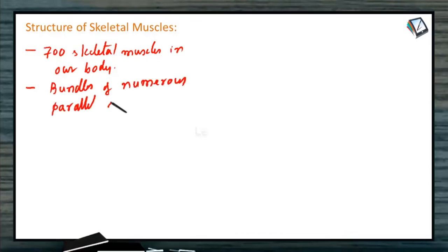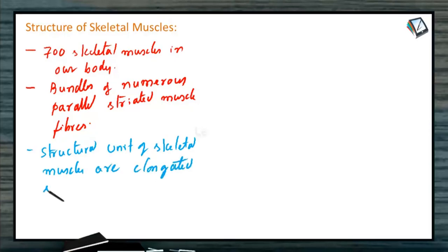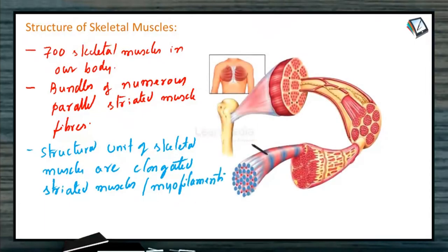The structure of skeletal muscle cell. Generally in human body, there are nearly 700 skeletal muscles. Usually they occur in the form of bundles of numerous parallel striated muscle fibers. The structural unit of skeletal muscle cells are elongated striated muscles or myofilaments. Each muscle bundle is enclosed in a connective tissue called epimysium.